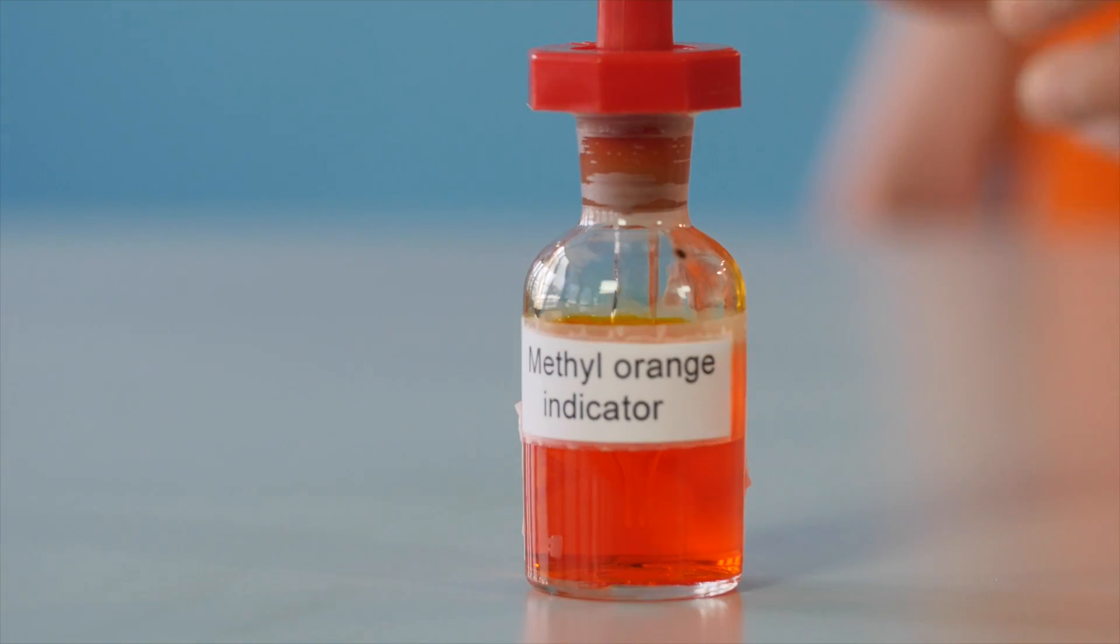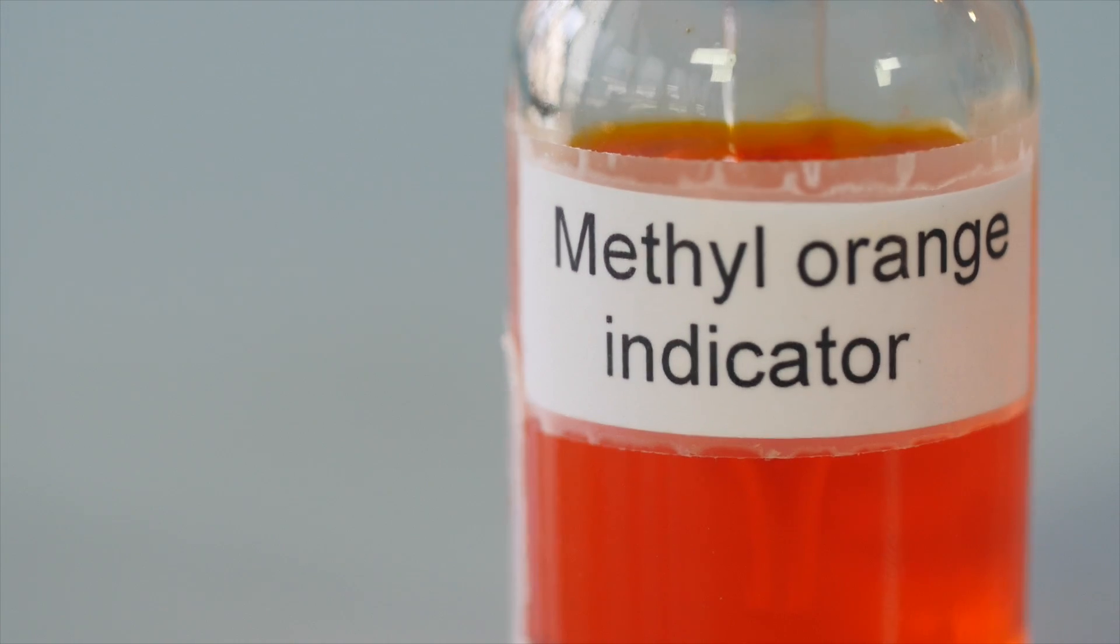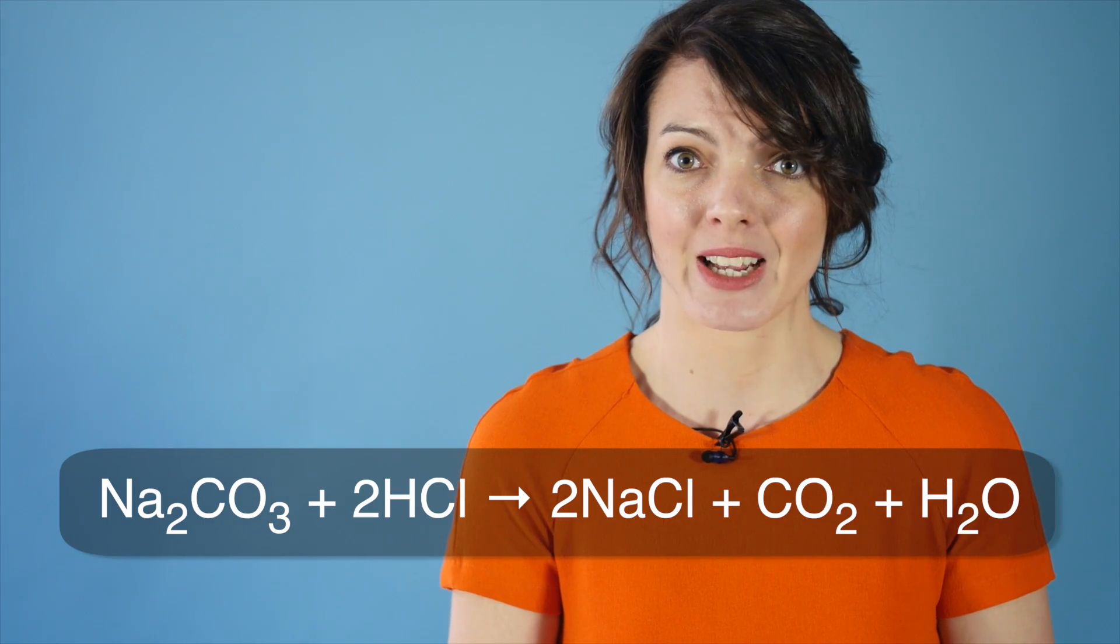An indicator solution will be used to help find the end point of the titration. In this case, methyl orange will be used, which will turn from red to yellow. Here is the equation for our reaction.